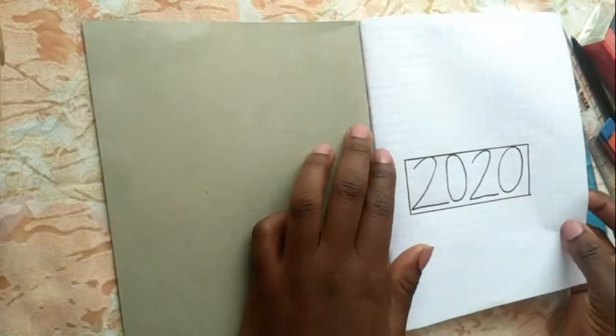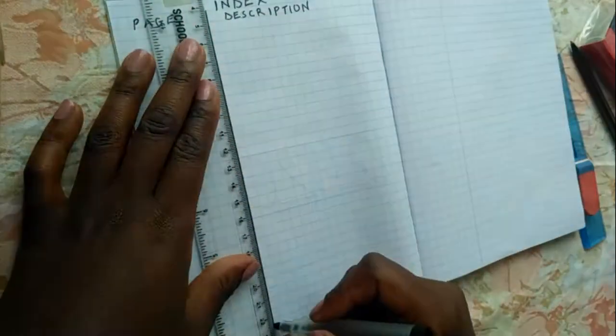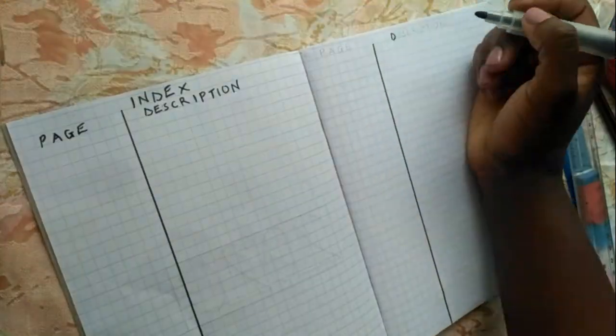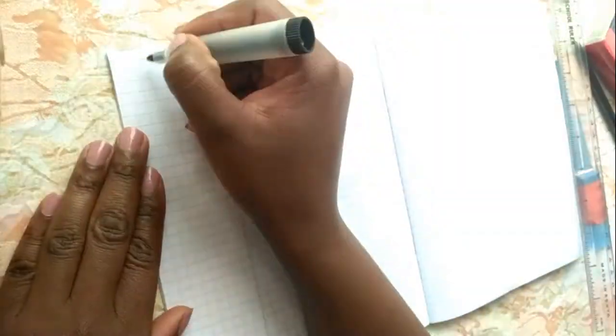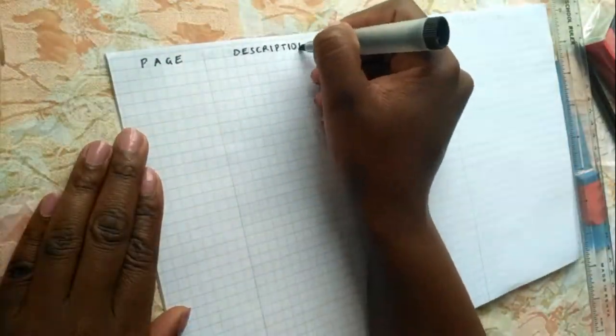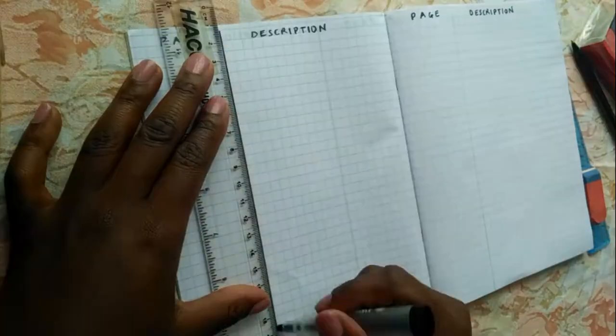Next are my index pages which are pretty simple with page on one side of the line with eight complete boxes and description on the other side of the line with seventeen complete boxes and this goes for another four pages.